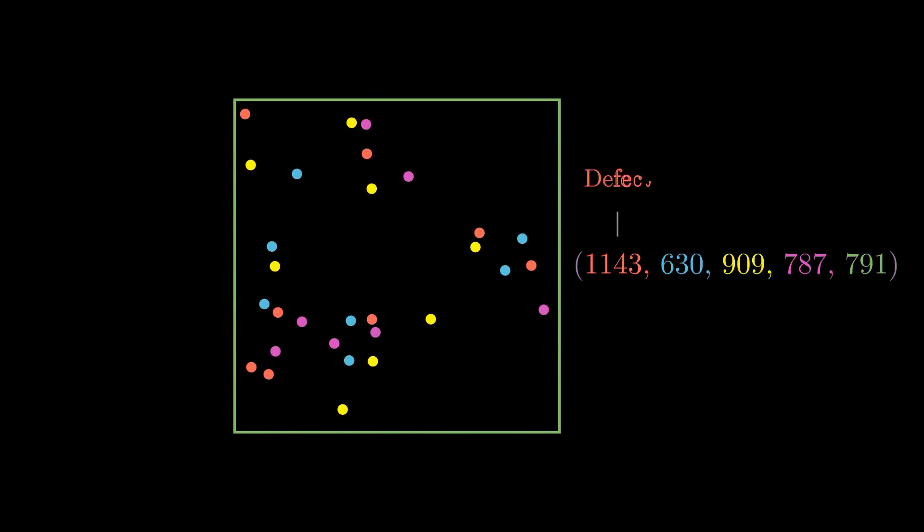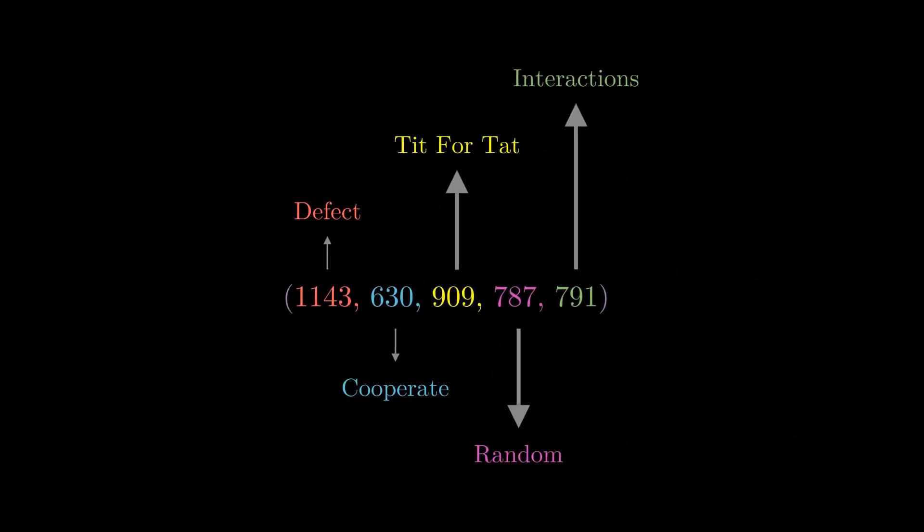And the results are exactly as expected. Always defect and tit-for-tat strategy do have the first and second highest points. So now, is always defect the dominant strategy again?